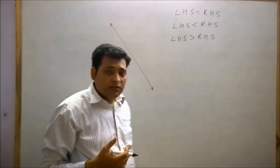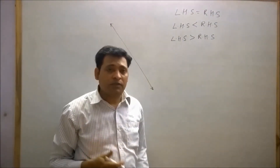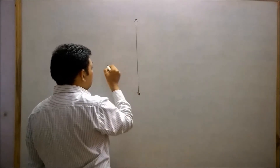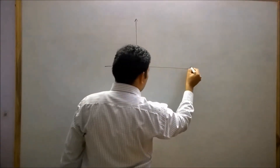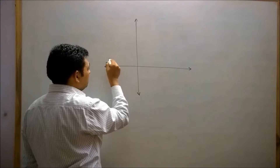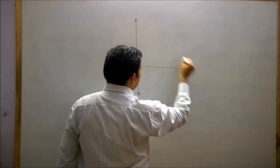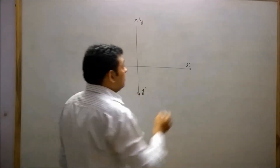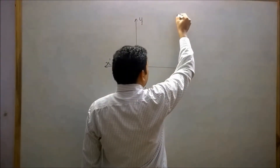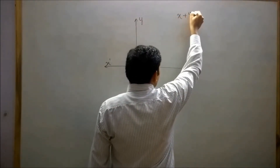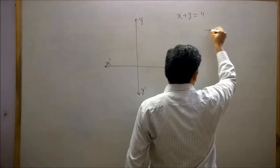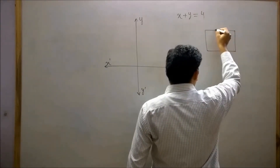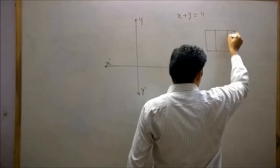Let's try to understand this concept with the help of an example. This is our vertical axis — the y-axis — and this is our horizontal axis — the x-axis. Now suppose I take the equation x plus y equals to 4. We need to find at least two solutions to draw the graph of this equation.